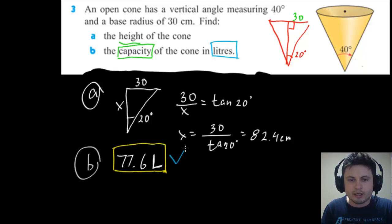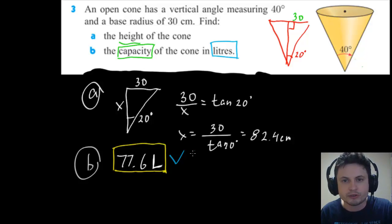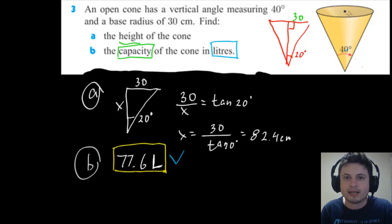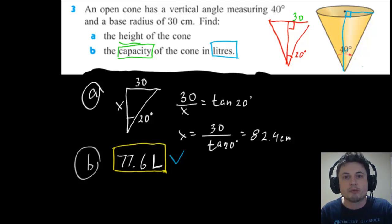This is a more difficult question type combining the volume formula from your formula sheet with trigonometry. The key takeaway: whenever you see an angle, think trigonometry — find the right triangle and use sine, cosine, or tangent. Always convert 3D shapes into 2D shapes and solve from there. Hopefully this was clear and you can now do these yourself. Thanks for watching and good luck!